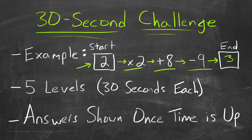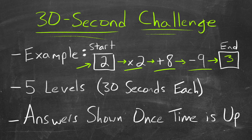Now there will be 5 levels that get harder as we move through. Each level is 30 seconds. Feel free to pause if you need more time though. The goal is to use mental math, but if you need to write anything down, that's fine too — do what works best for you. Answers will be shown at the end of each round, so pause if you want to before they are shown. Full explanations will be at the end.